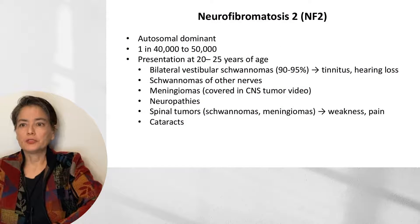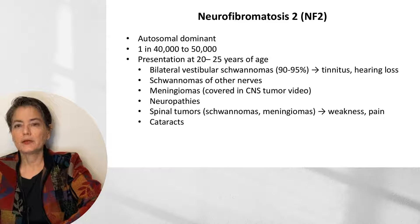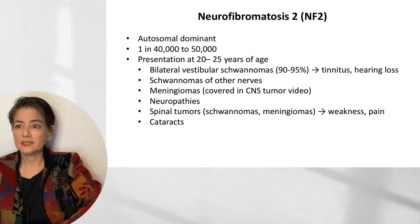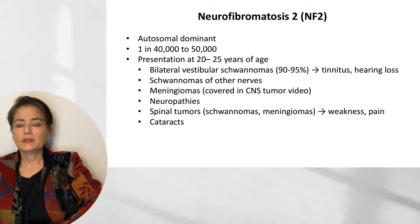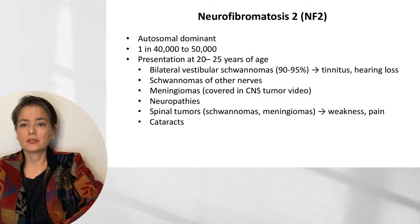This brings us to neurofibromatosis type 2, which, like NF1, is an autosomal dominant disease with complete penetrance, but is much less common, affecting 1 in 40,000 to 50,000 patients. Patients tend to present at 20 to 25 years of age, typically with bilateral vestibular schwannomas — schwannomas of cranial nerve 8 — seen in 90 to 95% of patients, presenting as tinnitus and hearing loss. We can also get schwannomas of other nerves, as well as meningiomas. The effect on the nerves can lead to neuropathies, weakness, and pain from spinal cord involvement. Patients may also have ocular symptoms including cataracts.